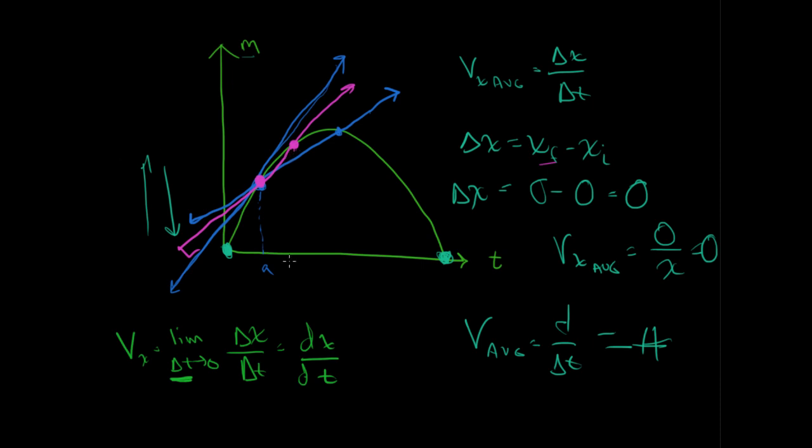We still have a secant line. It still draws through. But it is getting closer to this tangent line, or what would be considered the instantaneous velocity at that point.